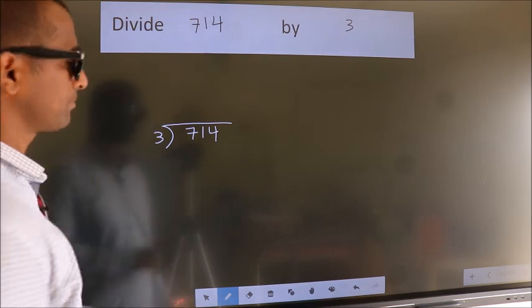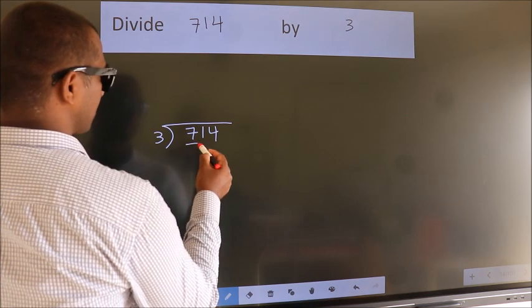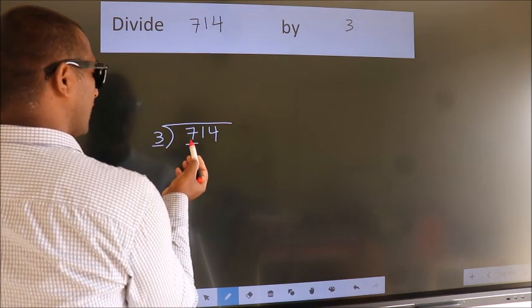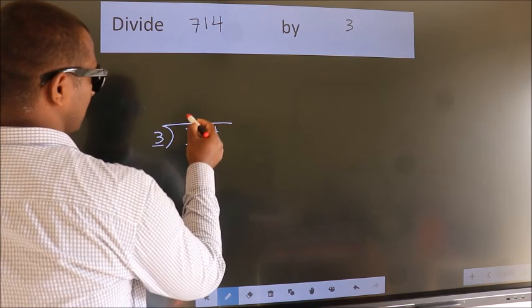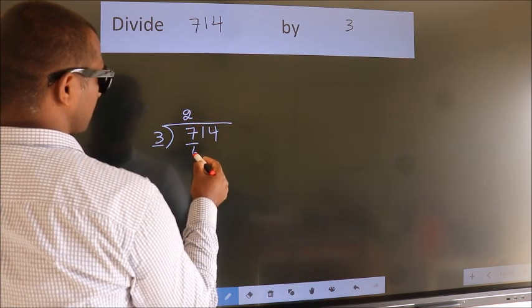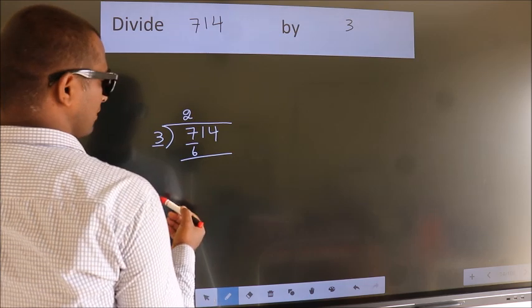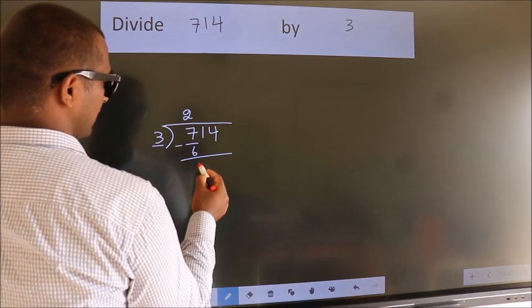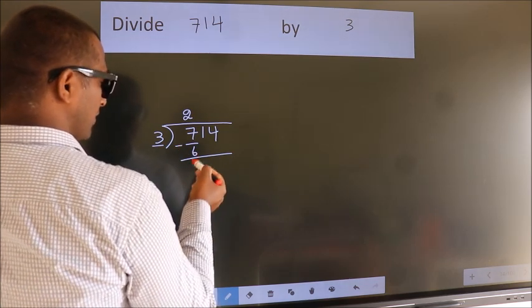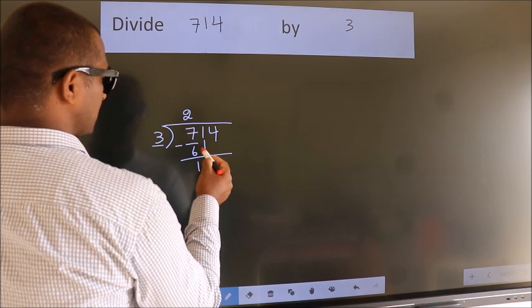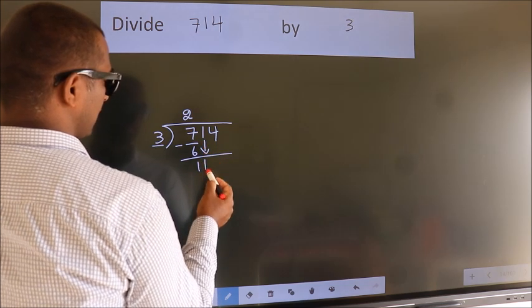Next, here we have 7, here 3. A number close to 7 in the 3 table is 3 times 2 equals 6. Now we should subtract. We get 1. After this, bring down the beside number, so 1 down.